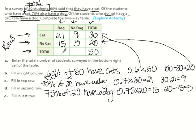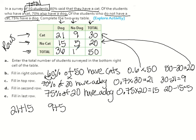Now fill in the last row by adding up the columns. 21 plus 15 equals 36, and 9 plus 5 equals 14. We check by making sure 36 plus 14 equals 50, which it does. And that's how you fill in a two-way table.